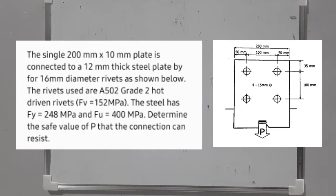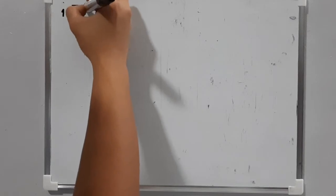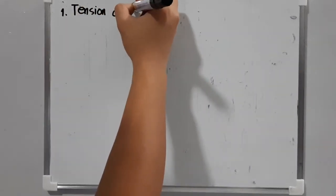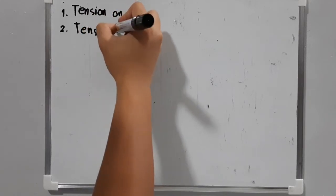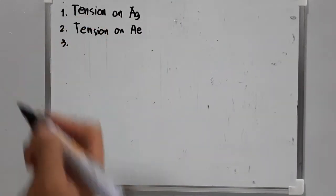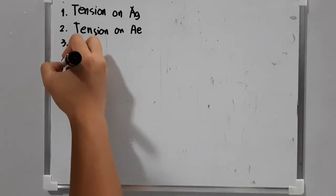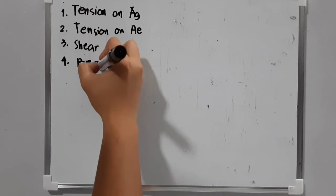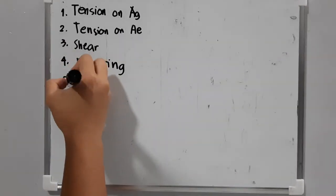We are asked to determine the safe value of P. We are analyzing our system in five categories: tension on gross area, tension on the critical or effective net area, shear strength on the bolts, bearing capacity of the plate or connection, and block shear.